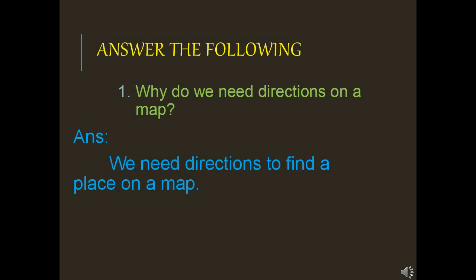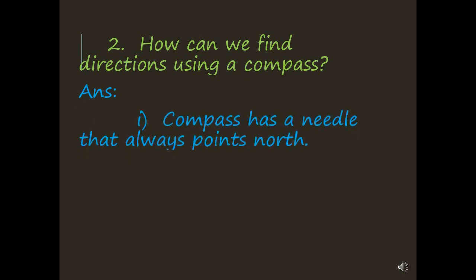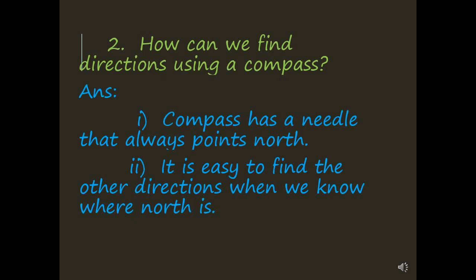Answer the following questions. Write the question and answer in your notebook. When you start writing the answer, leave some space from the margin. Why do we need directions on a map? Answer: We need directions to find a place on a map. Second question: How can we find directions using a compass? Answer: First point — a compass has a needle that always points north. Second point — it is easy to find the other directions when we know where north is.